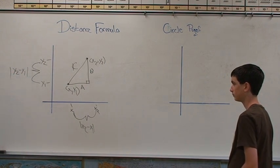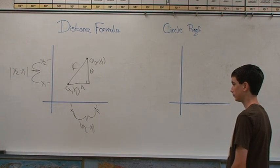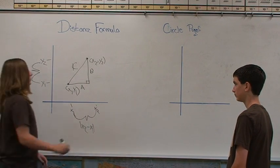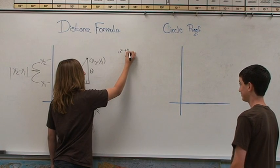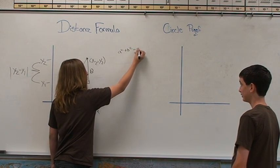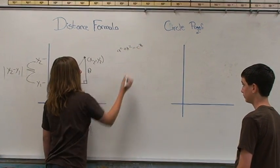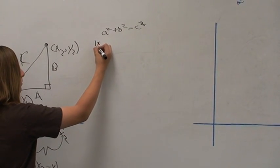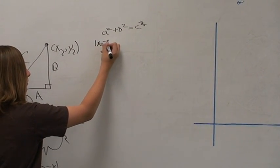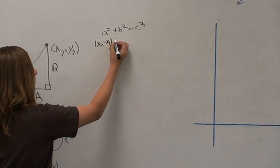Once we have the one dimensional distances for the legs, we use the Pythagorean theorem to find out what C is. A squared plus B squared equals C squared is the Pythagorean theorem.